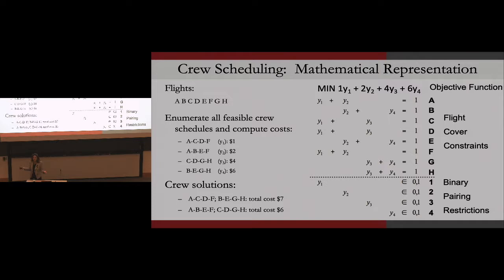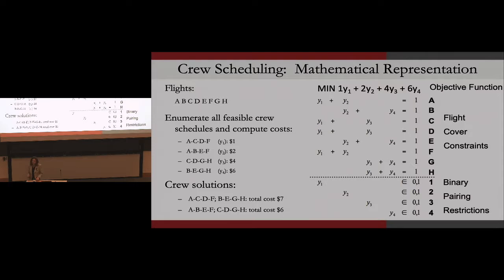This seems pretty simple — I can write down this set partitioning problem easily. But for a real US airline with a hub-and-spoke network, the number of possible pairings or schedules measures in the billions, trillions, or more. One of my students years ago tried to count how many feasible schedules there were. They got to 250 flights, then increased it to 500, came back three days later and the model was still running and counting. So they gave up. The number of decision variables is exponential.